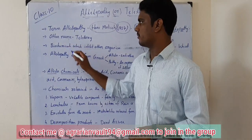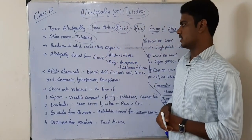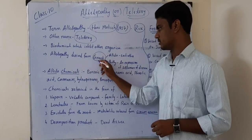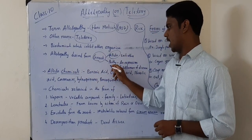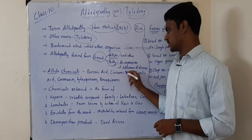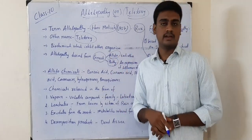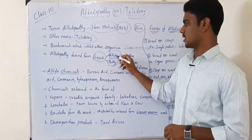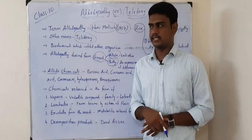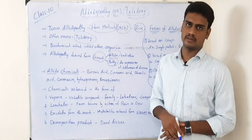The other name of allelopathy is teletoxy. Allelopathy is derived from two Greek words: allelo and pati. Allelo means each other; pati means an expression of sufferance of disease.